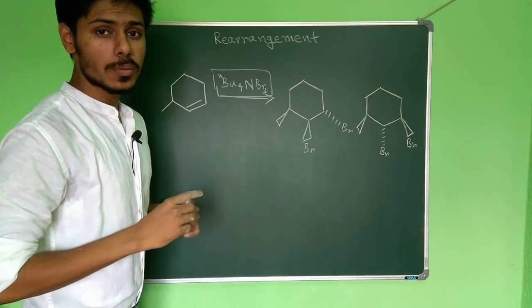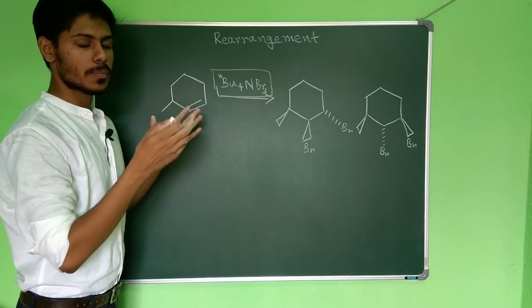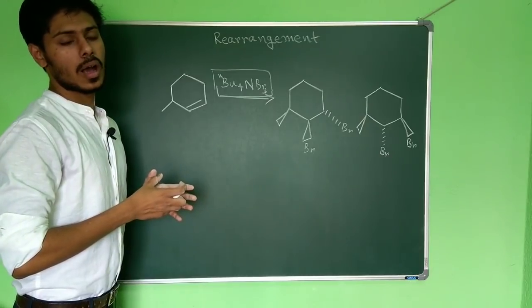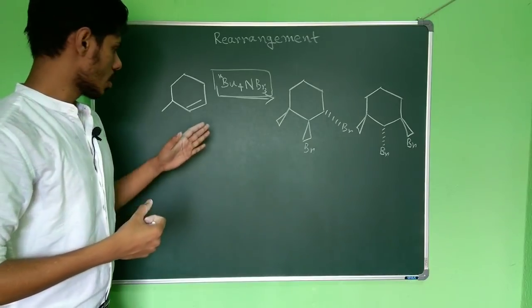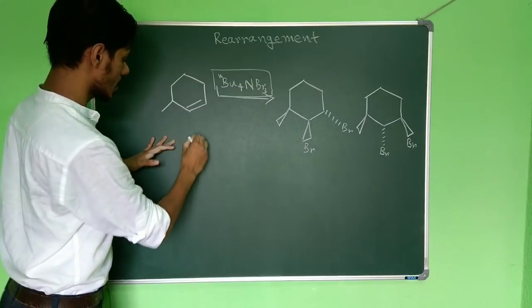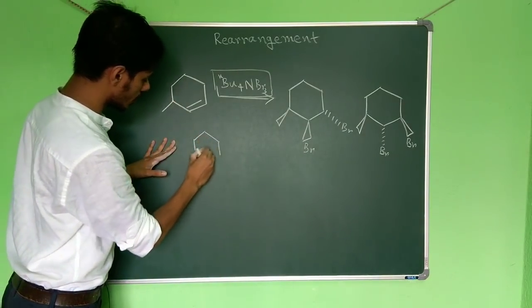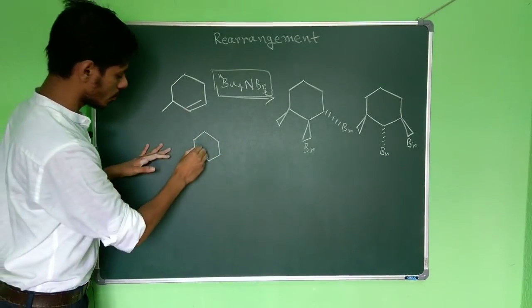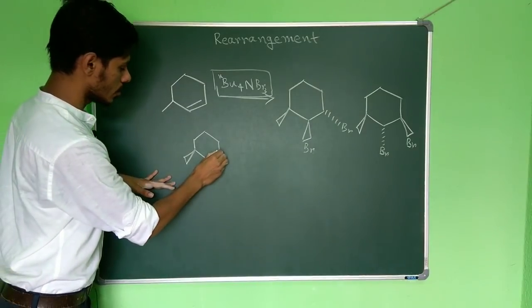To predict the correct answer, you have to draw this particular molecule in the half-chair form, otherwise you cannot correctly predict the correct answer. Let me first tell you why people make mistakes. The stereochemistry of the center is not given, so we have to take it either below the plane or above the plane. For the sake of discussion, let us take it as above the plane.